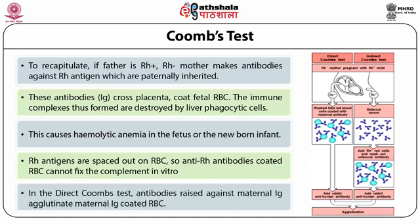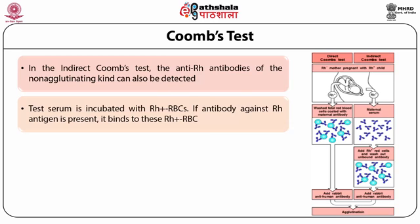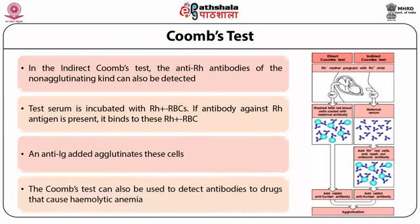In the direct Coombs test, antibodies raised against maternal Ig coated RBCs agglutinate maternal Ig coated RBCs. In the indirect Coombs test, the anti-Rh antibodies of the non-agglutinating kind can also be detected. Test serum is incubated with Rh positive RBCs; if antibody against Rh antigen is present, it binds to these Rh positive RBCs. An anti-Ig added then agglutinates these cells. The Coombs test can also be used to detect antibodies to drugs that cause hemolytic anemia.